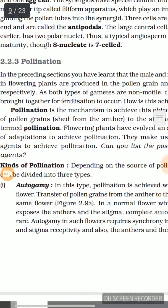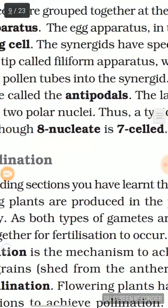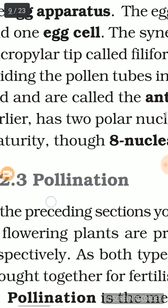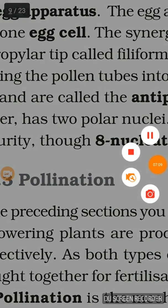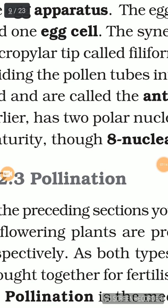Now let's look at pollination. There are different methods of pollination. Insect pollination is also known as entomophily. 'Phily' is the term used for pollination, and 'entomo' refers to insects, so collectively it is known as entomophily.